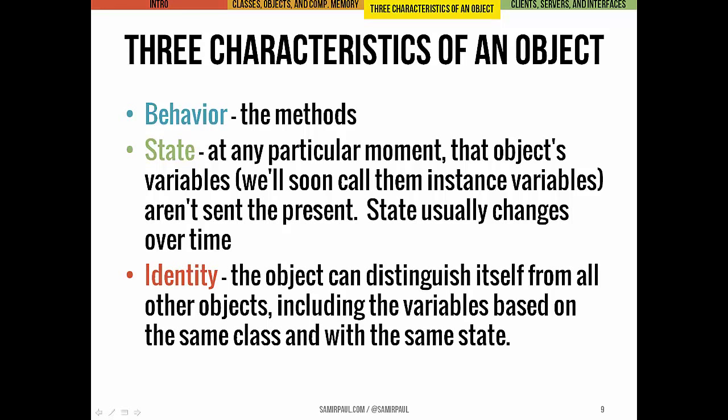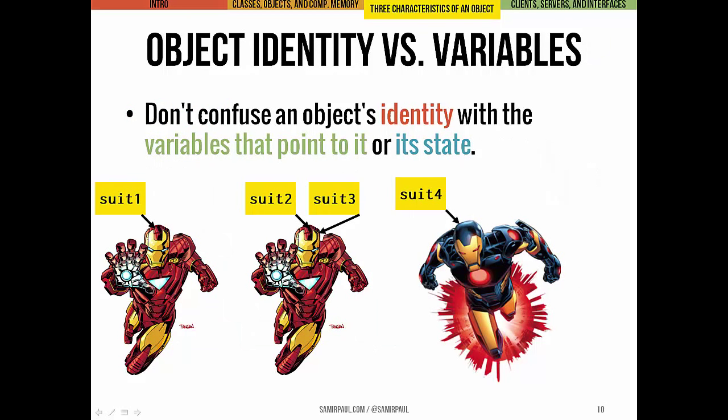An object also has its own identity, distinguishing it from all other objects in the computer's memory during a program's run. Even if two objects have the same state — even if all of their instance variables are exactly the same — they're still distinct objects in terms of identity; they still occupy separate space in memory. Identity is handled behind the scenes by the JVM, but you don't want to confuse that with state or with variables referring to the object. You can have more than one variable referring to the same object. Here we have three Iron Man suit objects: two have identical state with different variables pointing to them — suit1 points to one, suit2 and suit3 both point to another — and suit4 references an instance with different state.